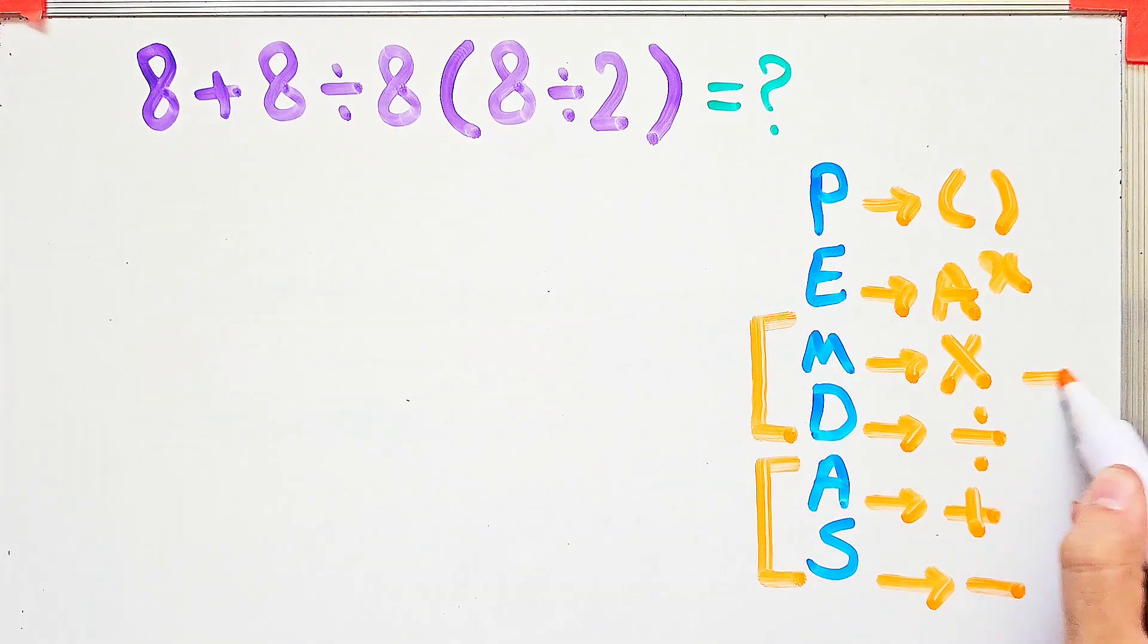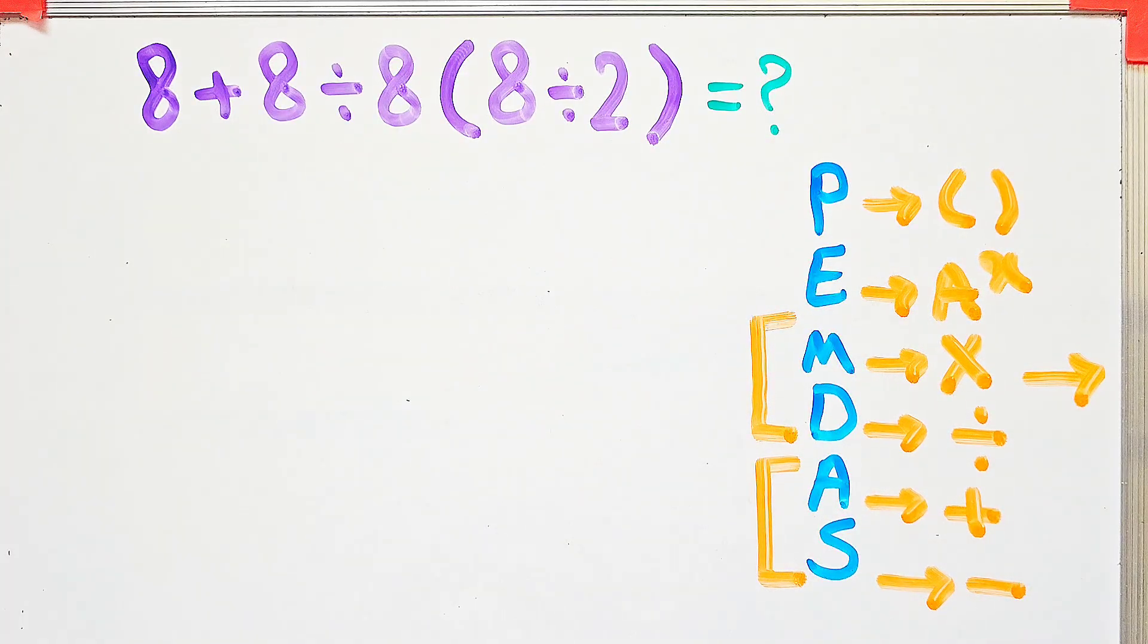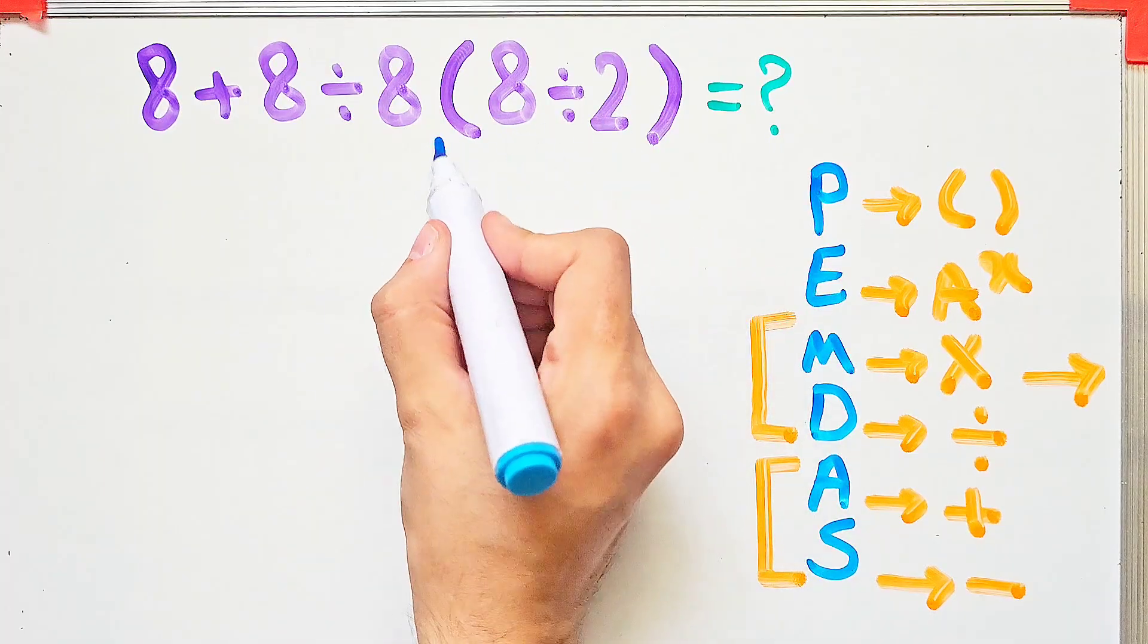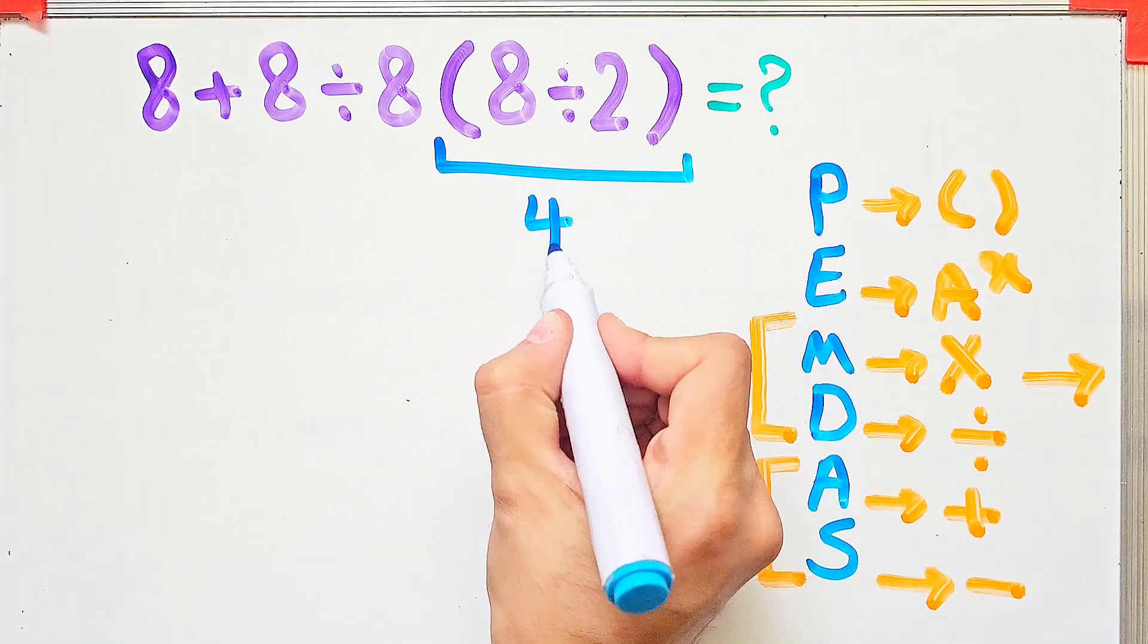When we have both in an expression, we start from the left and simplify the question. According to the PEMDAS rule, first we simplify the parentheses. 8 divided by 2 equals 4.